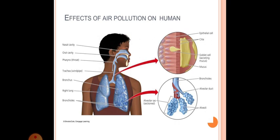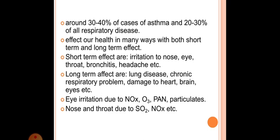Effects of air pollution on humans are shown in the figure. Around 30-40% of cases of asthma and 20-30% of all respiratory diseases affect our health in many ways with both short-term and long-term effects. Short-term effects are irritation to nose, eye, throat, bronchitis, headache, etc. Long-term effects are lung disease, chronic respiratory problems, damage to heart, brain, eyes, etc.